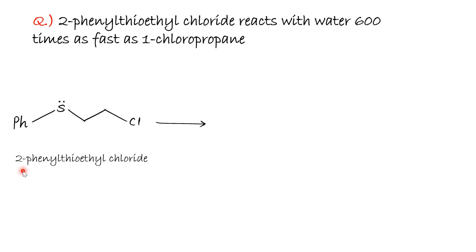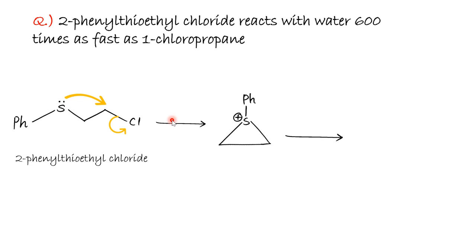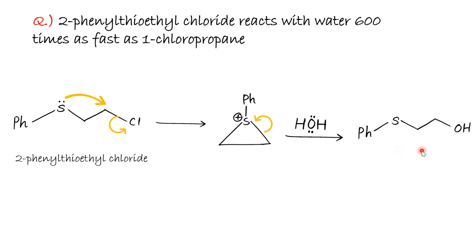In 2-phenylthioethyl chloride, the sulfur lone pair acts as the neighboring group and attacks this carbon, eliminating Cl⁻, forming a three-membered episulfonium (thiiranium) cation. This is the first intramolecular SN2 attack, which gives inversion of configuration. In the second step, since water is a weak nucleophile, the C–S bond breaks to form a carbocation, and water then attacks to give the final product with an OH group. This is one more example of sulfur acting as a neighboring group. In the next lecture we will discuss pi bonds and sigma bonds acting as neighboring groups. Thank you.